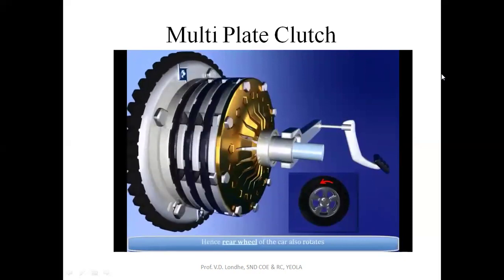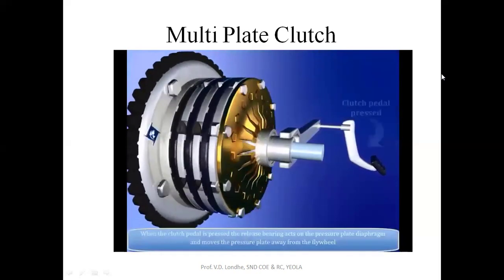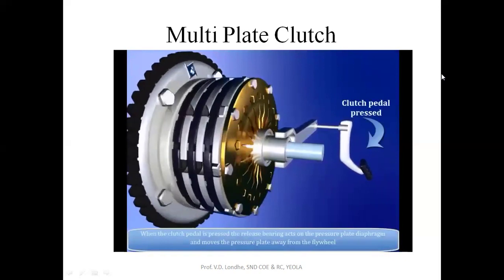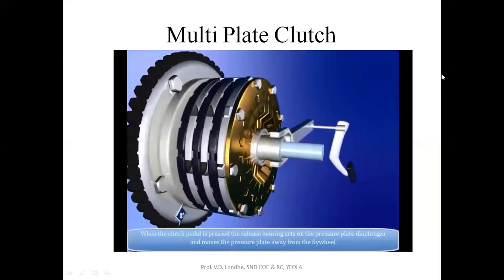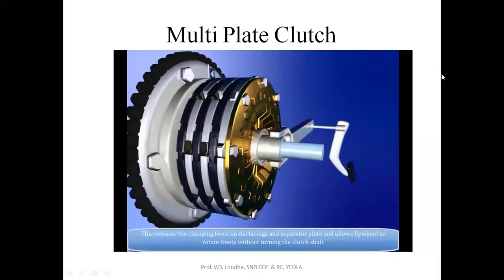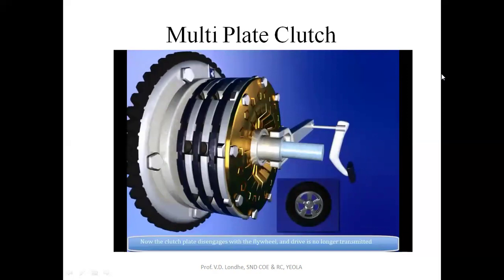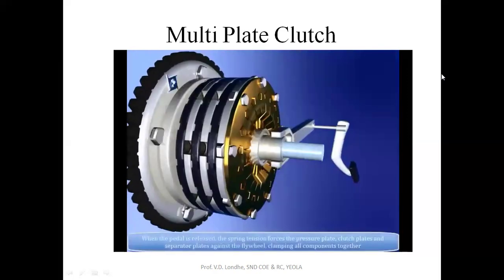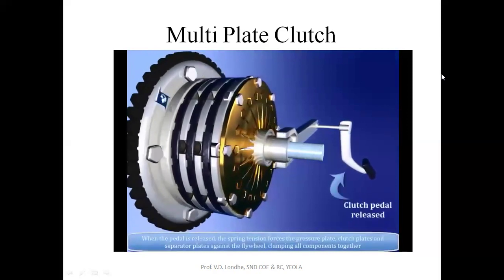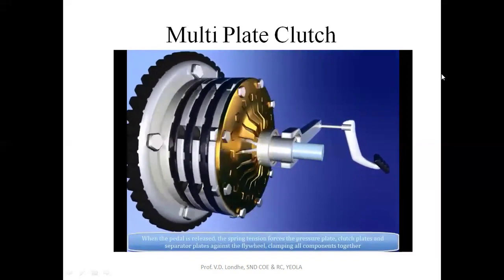Hence the rear wheel of the car also rotates. When the clutch pedal is pressed, the release bearing acts on the pressure plate diaphragm and moves the pressure plate away from the flywheel, releasing the clamping force on the facings and separator plate and allowing the flywheel to rotate freely without turning the clutch shaft — the clutch plate disengages and drive is no longer transmitted. When the pedal is released, spring tension forces the pressure plate, clutch plates, and separator plates against the flywheel, clamping all components together.